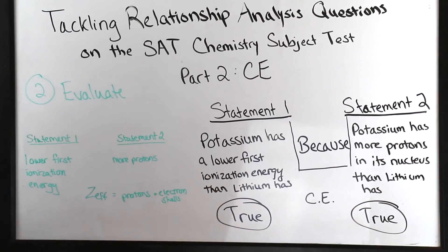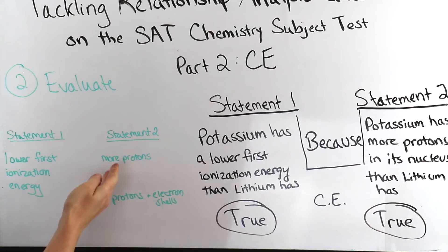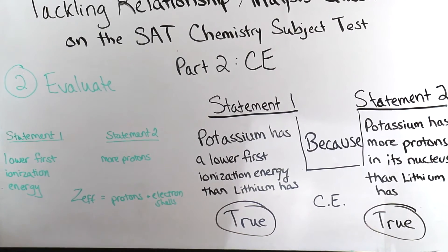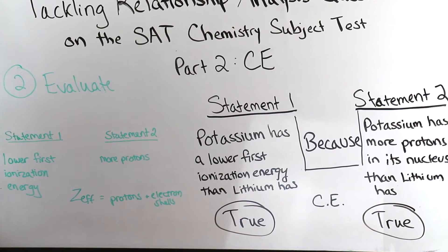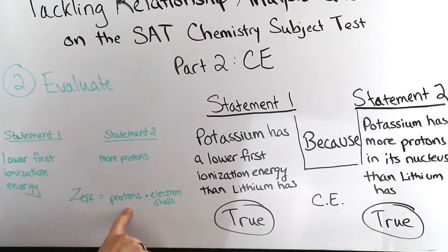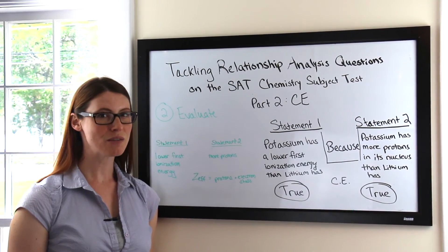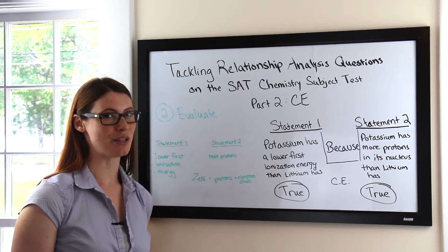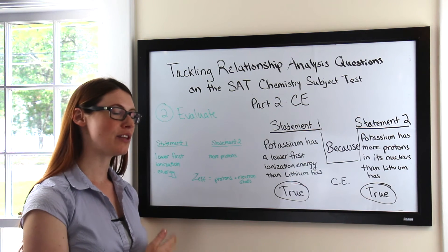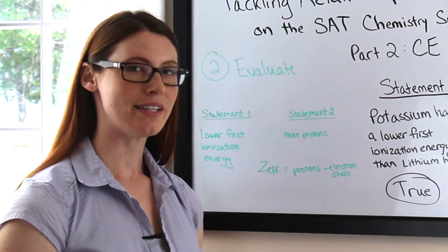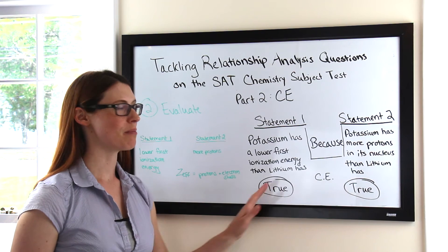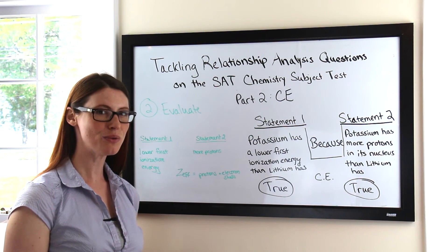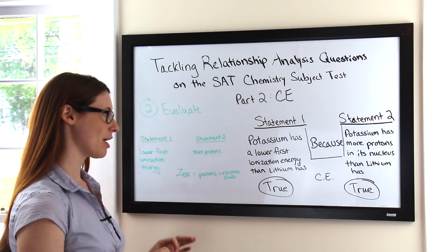Now that we've isolated the problem, we can evaluate for a correct explanation. From statement two, we have the explanation that more protons gives a lower first ionization energy. You'll know that first ionization energies depend on effective nuclear charge, or Z-effective, which depends on the number of protons plus the number of electron shells. From this, you'll easily be able to come up with counterexamples, like elements that are in the same period, where more protons actually equals a higher first ionization energy. Therefore, this cannot be the correct explanation. If you hadn't isolated, in the context of this question the explanation might appear to be correct, but this is because lithium and potassium are in the same group. Because you isolated, you were able to get past the details and get to the crux of the problem.